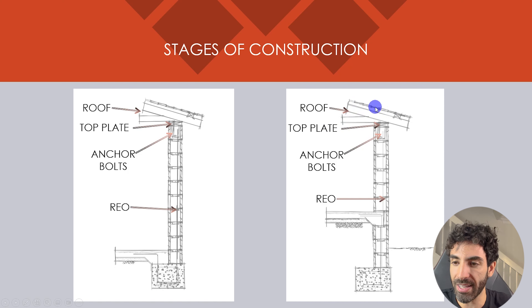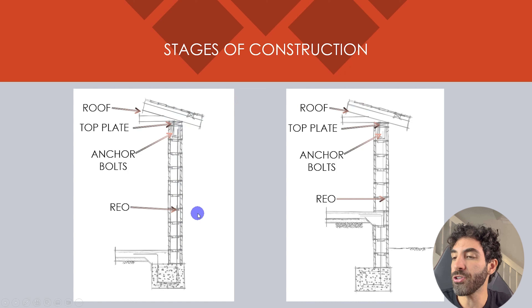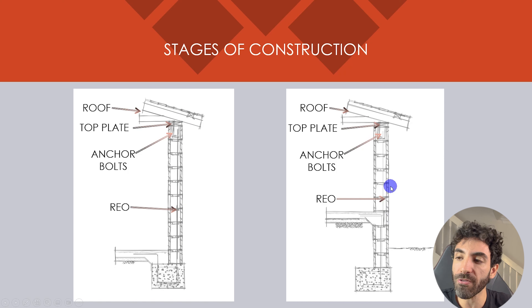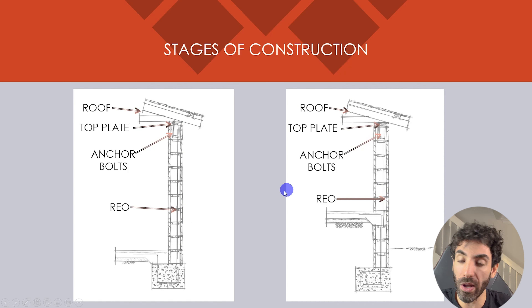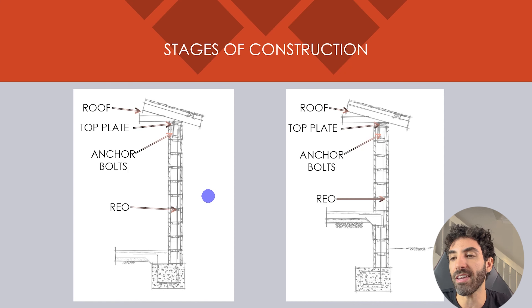Top plates are fixed to the block walls if required, and the internal partitions and roof framing are constructed. You can then attach sarking and cladding to the roof, render the exterior walls if required, paint, and install windows, doors, and all the fixtures and fittings. If you want to learn how structural engineers inspect buildings under construction, watch the next video — I'll see you there.